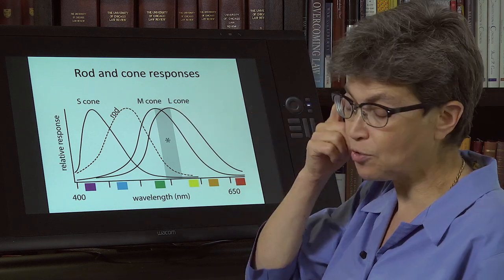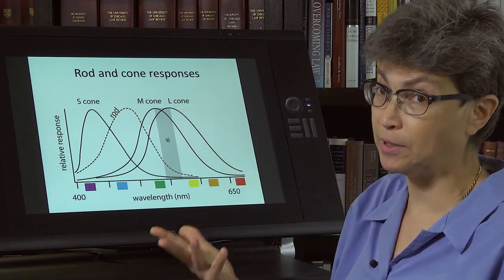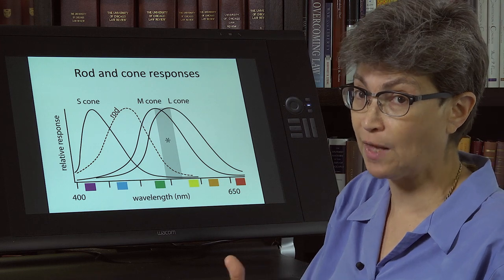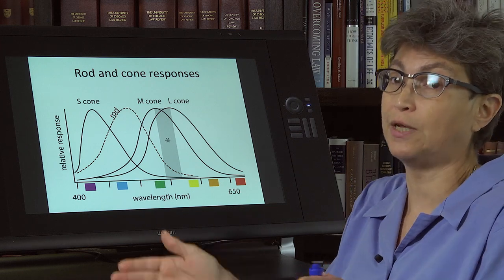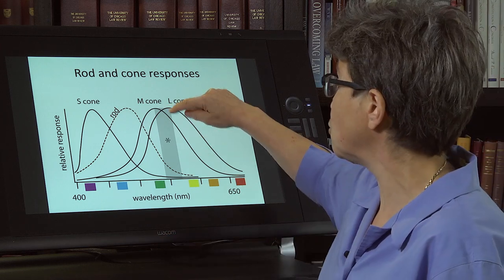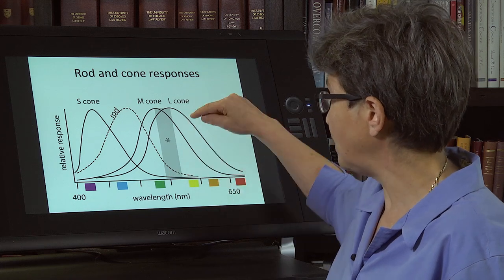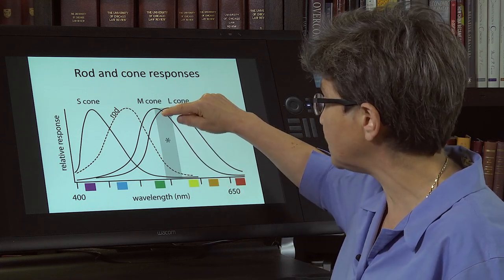So now consider a person that has an anomaly, not a loss of the M or L cone, but an M or L cone that has moved towards the other one. So with this notch, what you're losing is this stuff. You're losing this stuff that is too close to count.